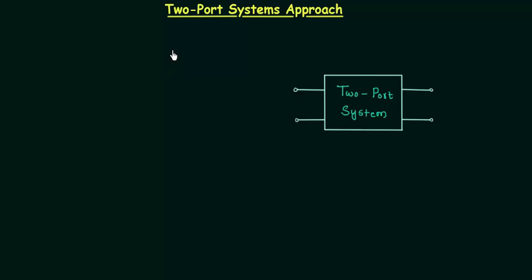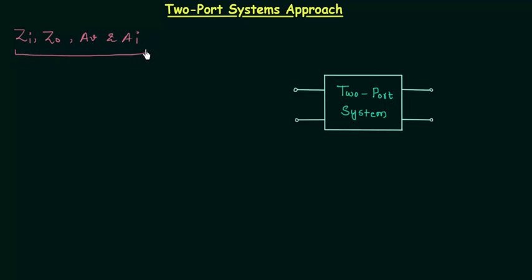In this presentation we will understand the two-port systems approach. Till now we have analyzed BJT amplifier circuits with load resistance, obtaining input impedance, output impedance, voltage gain, and current gain. We first obtained the AC equivalent circuit, then replaced the transistor with its equivalent model, and finally used network solving techniques to obtain these four parameters.